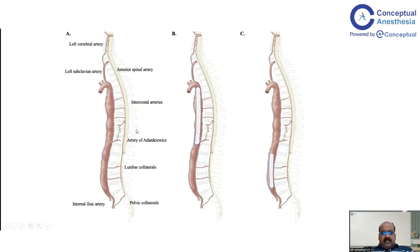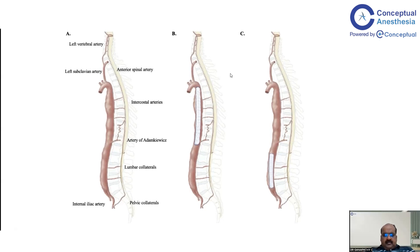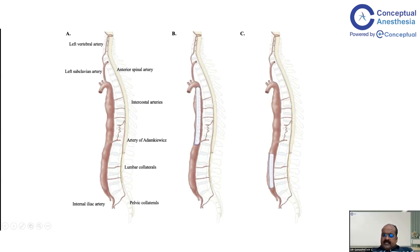The artery of Adamkiewicz forms the largest collateral supply for the lower thoracic aorta. Its location varies anatomically — most commonly in zone 5 — so whenever those areas are occluded, the risk of spinal cord ischemia is very high. When a stent is placed beyond the left subclavian artery through to the diaphragm, the landing zone covers the artery of Adamkiewicz area, placing that segment of spinal cord at risk of ischemia. Abdominal aortic stenting, however, does not significantly threaten the artery of Adamkiewicz, making spinal cord ischemia quite rare in that setting.